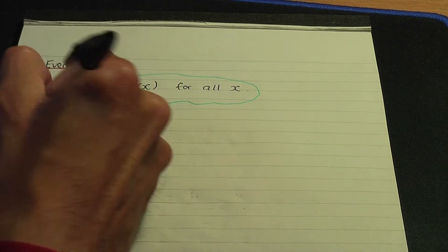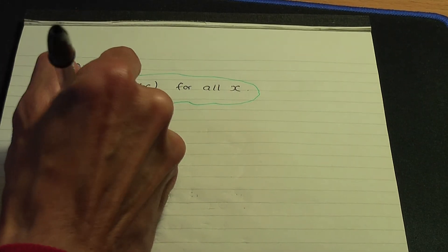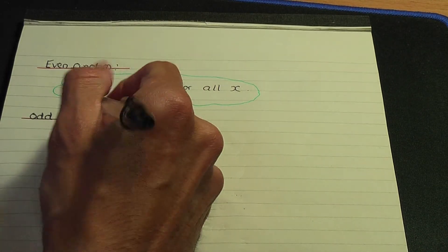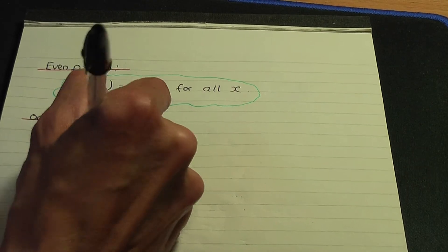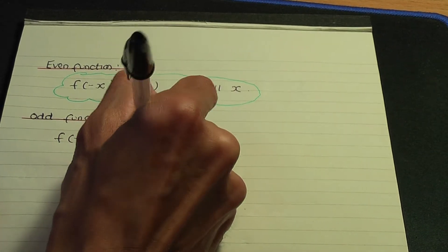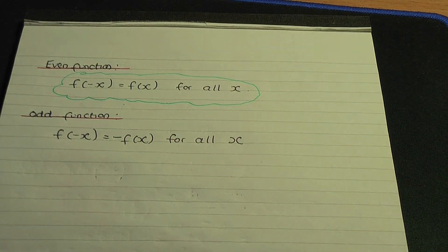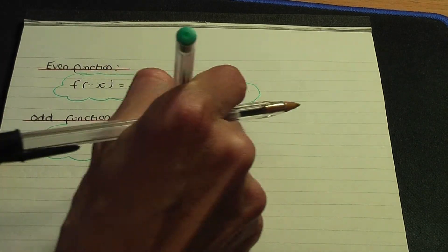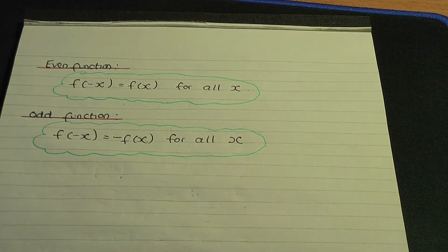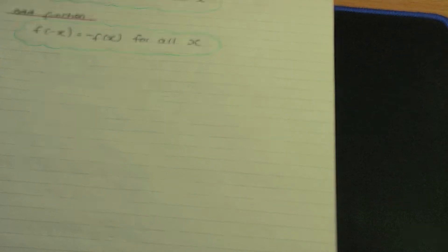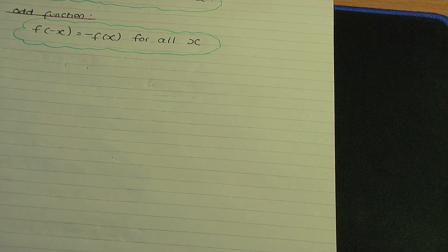However, for the function to be odd, here is the criteria: f of minus x equals minus f of x for all values of x. Now, I want to prove to you that hyperbolic sine and hyperbolic tan are odd and only hyperbolic cos is even.